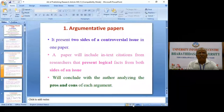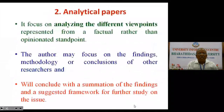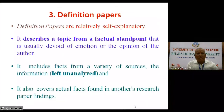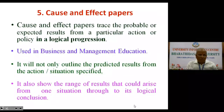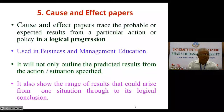First is the argumentative paper, second is the analytical paper, third is the definition paper, fourth is the compare and contrast paper, and fifth is the cause and effect paper. This is very important, my dear young researchers. We are all researchers in commerce, management, or economics, and almost all our topics must come under this category — that is, cause and effect.